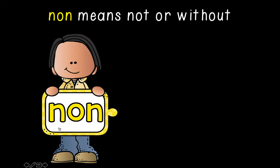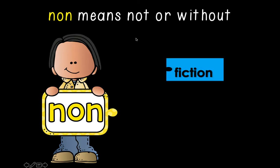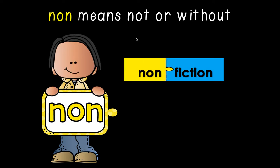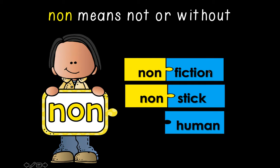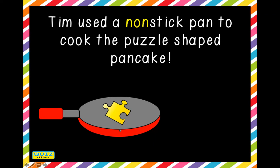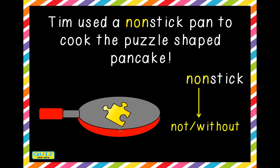Our last prefix today is non. Non means not or without. Nonfiction means a book without fiction in it. Nonstick means a pan without stickiness. Nonhuman means not human. Tim used a nonstick pan to cook the puzzle-shaped pancake — this pan is without stickiness. Non means not or without.